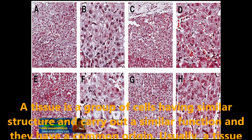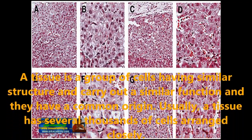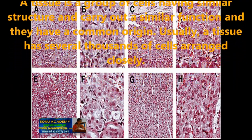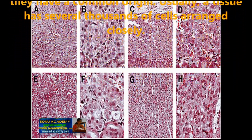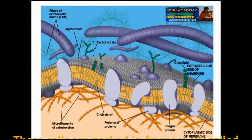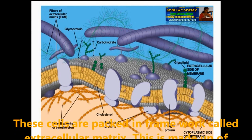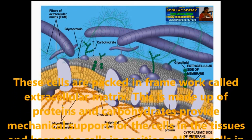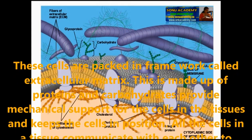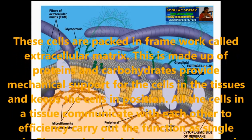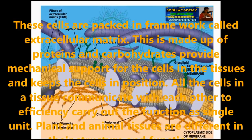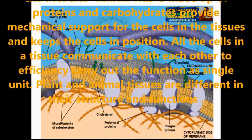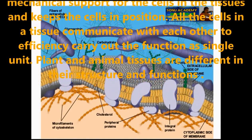A tissue is a group of cells having similar structure and carrying out a similar function, and they have a common origin. Usually, a tissue has several thousands of cells arranged closely. These cells are packed in a framework called extracellular matrix, which is made up of proteins and carbohydrates. The matrix also provides mechanical support for the cells in the tissue and keeps them in position. All the cells in a tissue communicate with each other to efficiently carry out the function as a single unit.